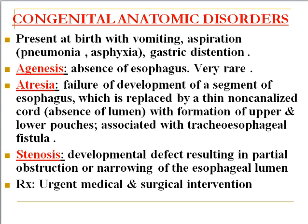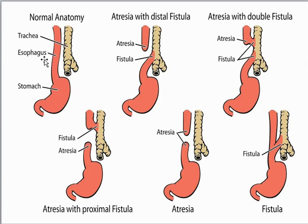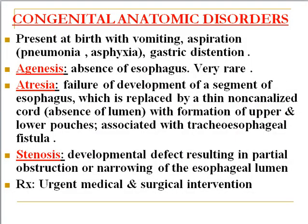The second congenital disorder is atresia — failure of development of a segment of the esophagus, which is replaced by a thin non-canalized cord-like structure, meaning absence of lumen with formation of upper and lower pouches. This is often associated with a tracheoesophageal fistula. As shown in the picture, there are several types: atresia with distal fistula, atresia with proximal fistula, distal atresia, or both proximal and distal atresia combined with a tracheoesophageal fistula.